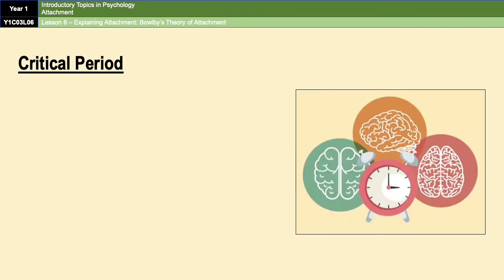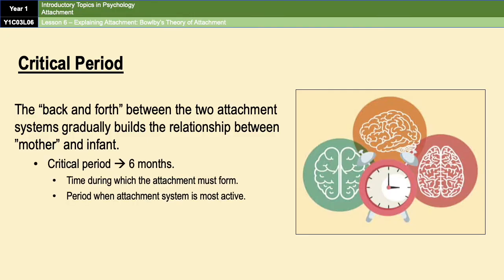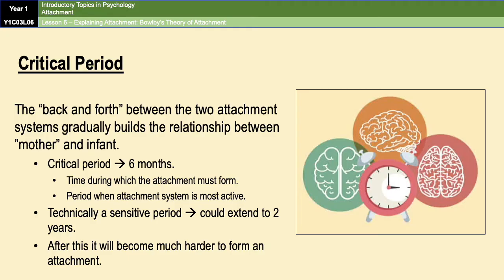Bowlby also proposed the idea of a critical period of around six months. This is a time frame when the infant attachment system is most active and most sensitive to attachment formation. According to Bowlby, this critical period can technically be classed as a sensitive period because it can extend up to around two years. The general idea is that if an attachment is not formed during this time, it will be much harder to form one later in life, and failure to form this attachment can lead to irreversible consequences in terms of intellectual, social, emotional, and psychological development.